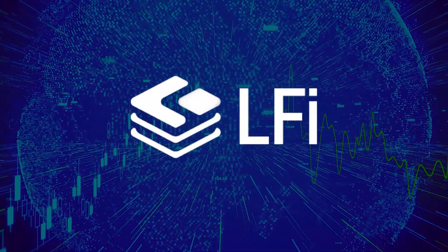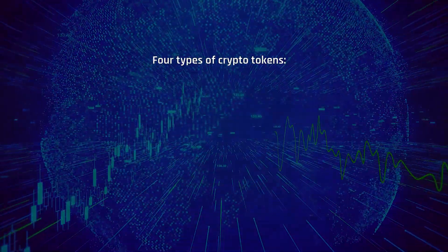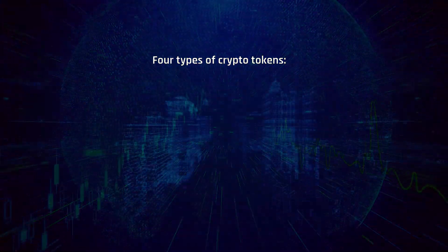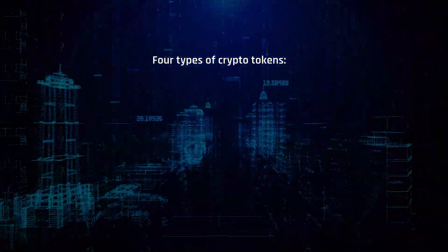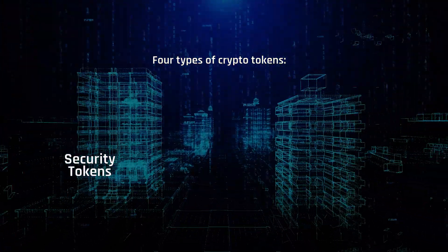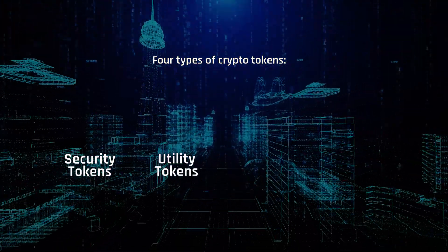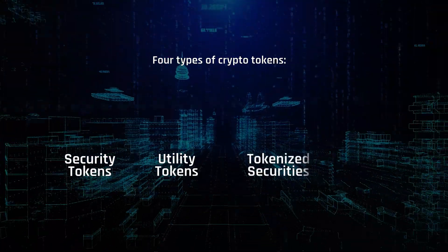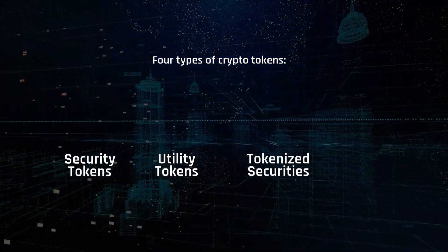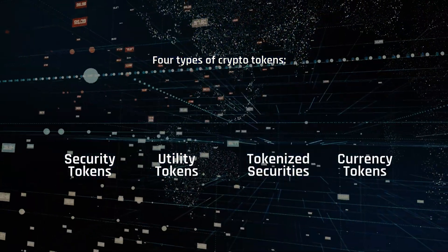Cryptocurrency tokens can be categorized into four distinct types: security tokens, utility tokens, tokenized securities, and currency tokens.